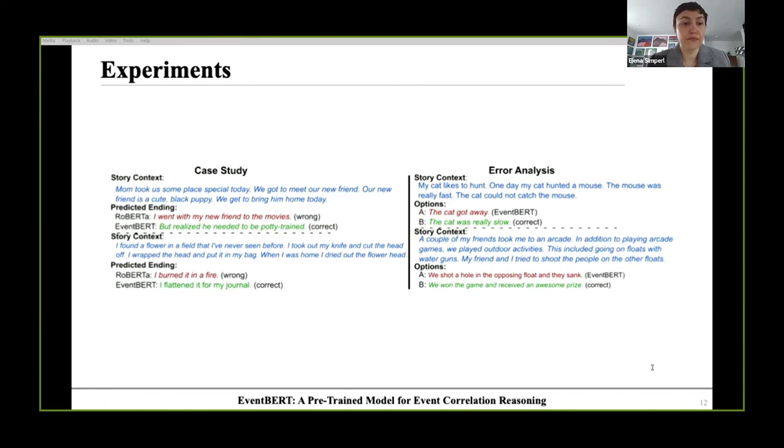There are some error cases in the right figure. As we can see that it is difficult to select the correct option for some examples. Take the first case as an example, although according to the context we can infer that it is more likely to choose the cat was really slow, the option itself is somehow contradictory to common sense since usually a cat is fast, leading to confusion during inference. We leave such complex situations for future work.